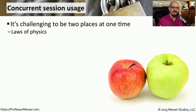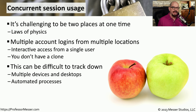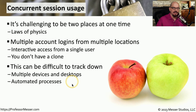Traditional physics tells us that if we are in one location, it's not possible for us to also be in another location at the same time. We can apply this to logins and session usage on our systems. If one person is logged in from one facility and we notice that same person is also logged in from a different location, that may be an indicator of compromise. Of course, this may not always be the case — many of us have accounts running on different devices simultaneously, such as a desktop, laptop, and mobile device, which can exist in different locations. Or it may be an automated service login, which is obviously not the same as an interactive login.